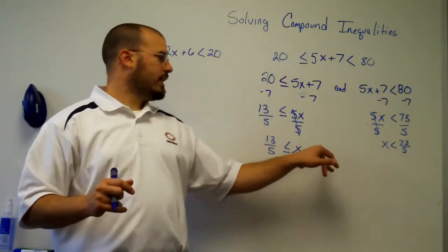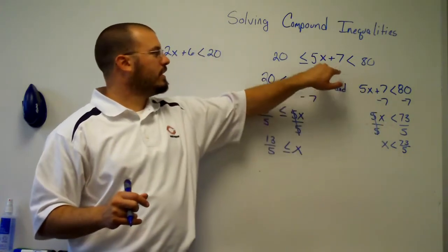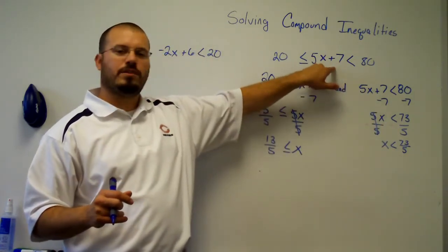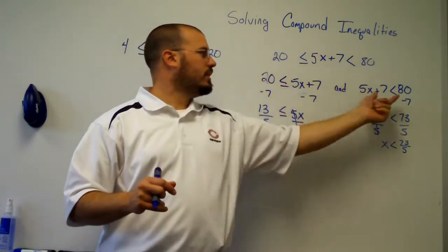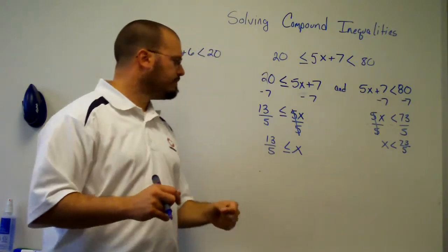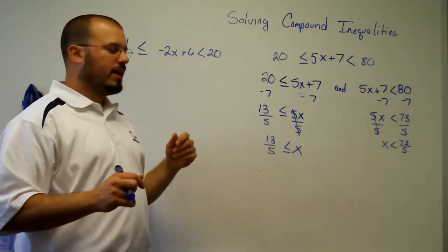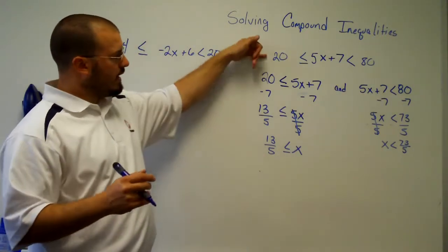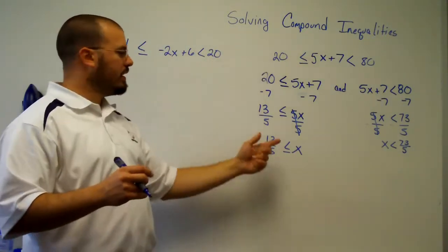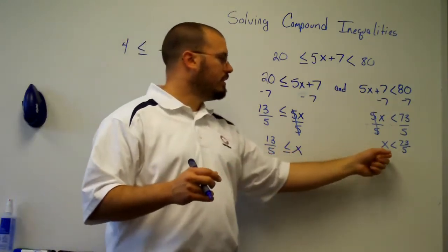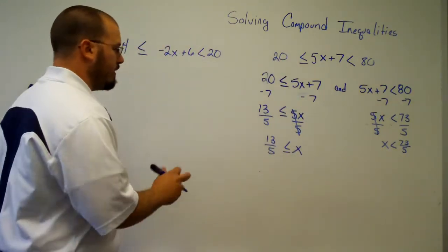Now, x is involved in both of them, just as 5x plus 7 was involved in both of the original inequalities. So I'm going to graph these and see if we can write them as a compound inequality — take these two inequalities and write them as a single compound inequality.